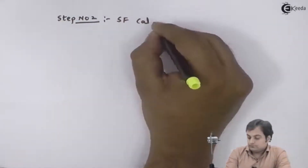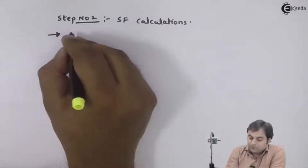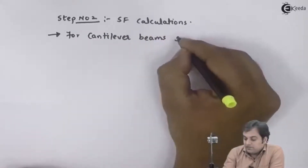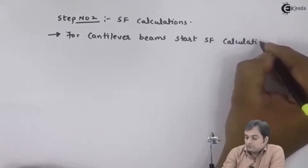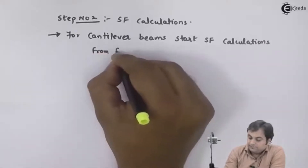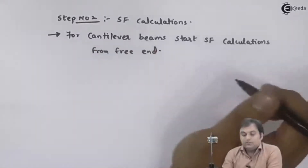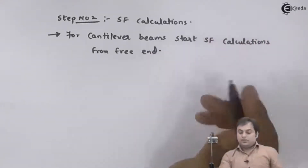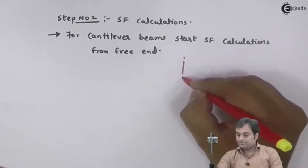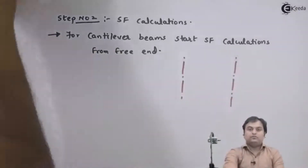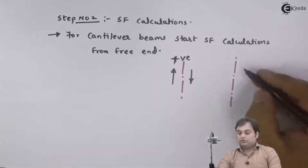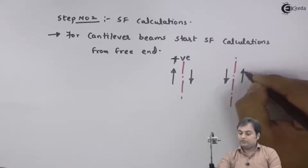Now I will write down the SF calculation. For cantilever beams, start SF calculations from the free end — that is, from the right-hand side. Now marking the sign convention: upward force to the left of a section and downward force to the right of a section are positive. Downward force to the left and upward force to the right of a section are negative.